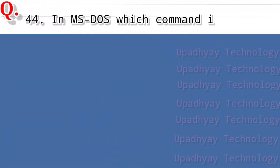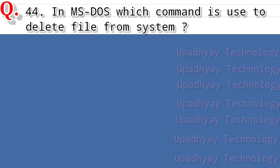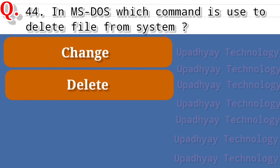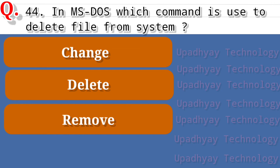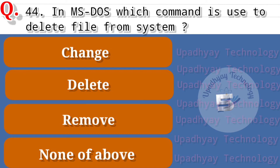Question number 44 of operating system: in MS-DOS, which command is used to delete files from the system? The options are Change, second option is Delete, third option is Remove, and the last option is None of the above. The correct answer is Delete.